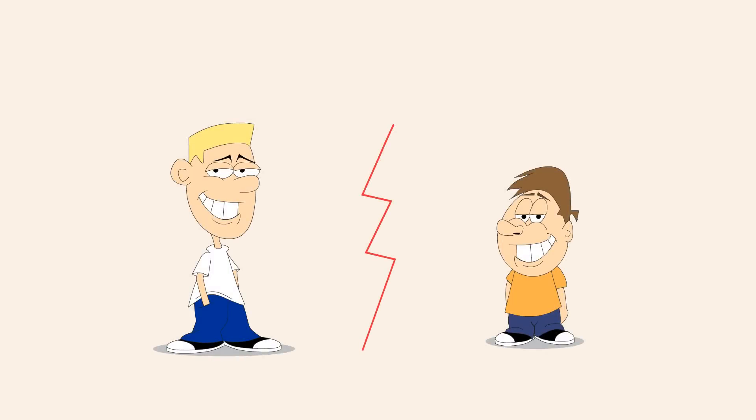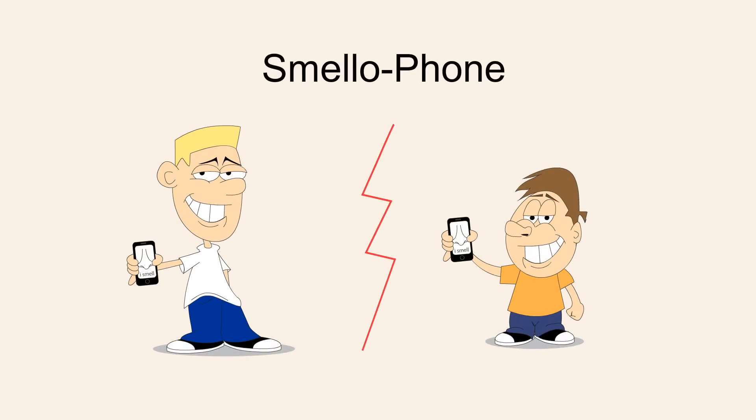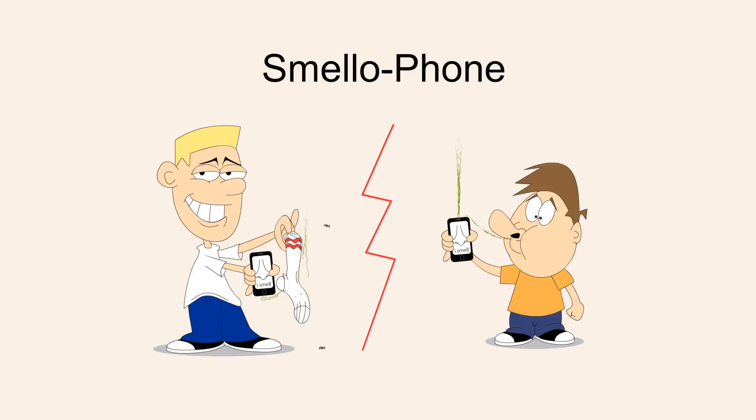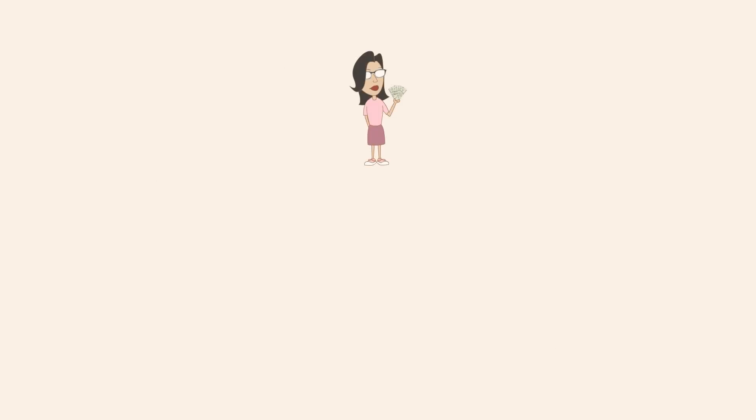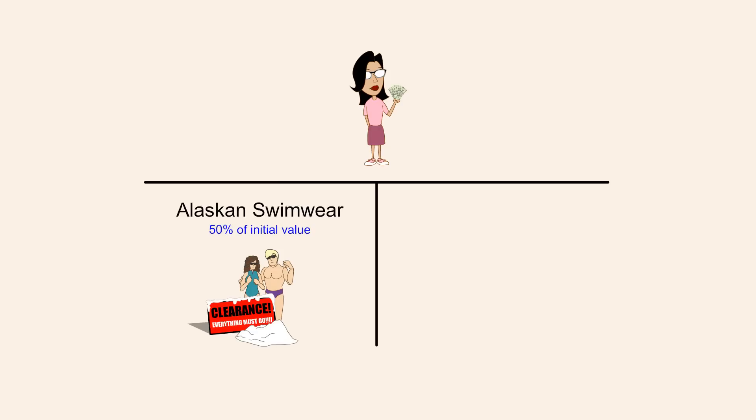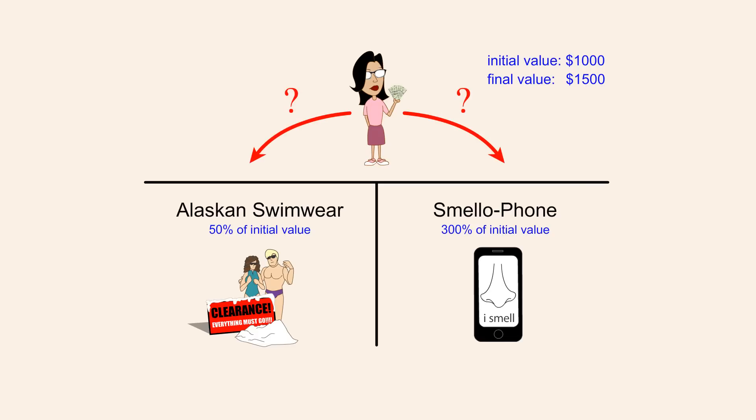The second company, Smellophone, has developed a smartphone which not only transmits sounds and pictures, but can also transmit smells. Its stock triples to 300% of its initial value. In spite of her bad investment in Alaskan Swimwear, Adrian's brilliant Smellophone investment more than makes up for her loss, and the total value of her $1,000 stock portfolio increases to $1,500. Knowing only this information, is it possible to determine how much money Adrian invested in each company?